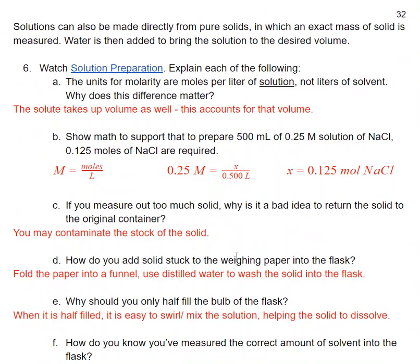One of the ways we can make solutions is to make them directly using pure solids. We measure a specific mass of a solid and then we bring the solution up to the desired volume with distilled water. The units for molarity are moles per liter of solution, not liters of solvent. Why does this difference matter? The solute takes up volume as well. This is a way to help account for that volume. We also have to deal with the fact that we might have intermolecular attractions that form that cause the volume to decrease.